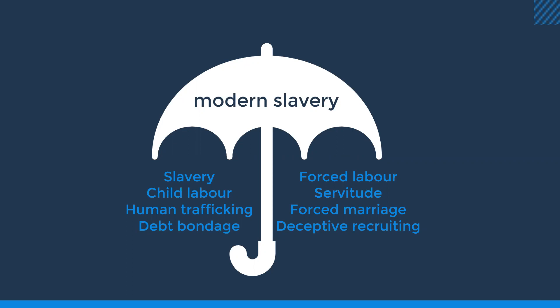Servitude is similar to forced labour, except it also requires that the person is deprived of their personal freedom outside of work. People are often required to live in the workplace or under constant supervision, subject to violence and threats and unable to leave. Servitude is commonly associated with domestic labour and the sex industry. Forced marriage is where a person is forced to marry without consent due to threats, deception, or physical, emotional, or financial pressure. Deceptive recruiting is where the victim is deceived about the conditions they'll face — promised one thing and finding out all too late that it is something else.